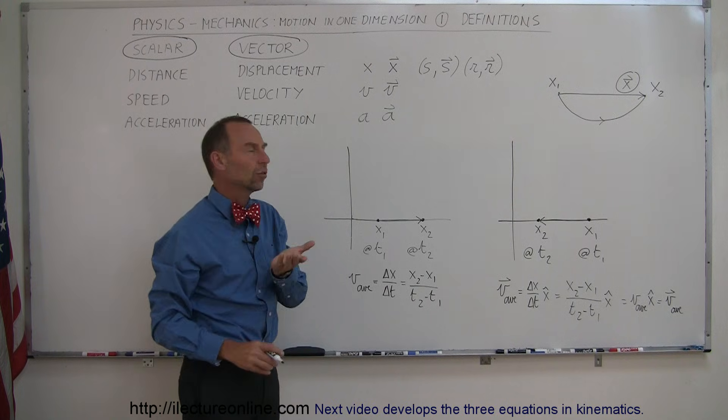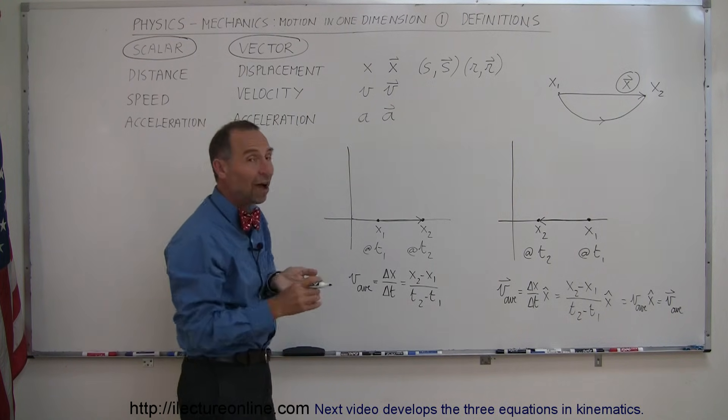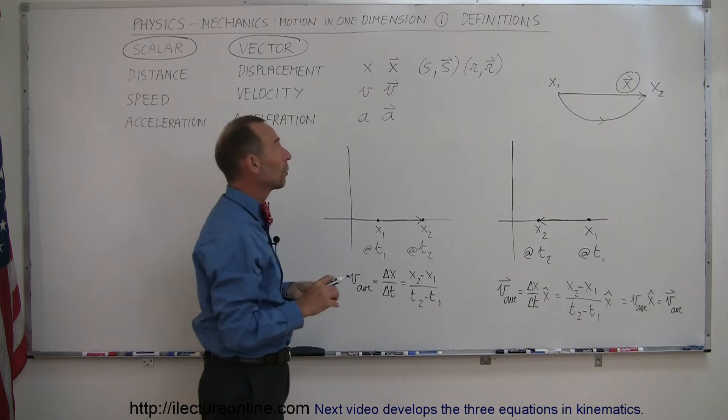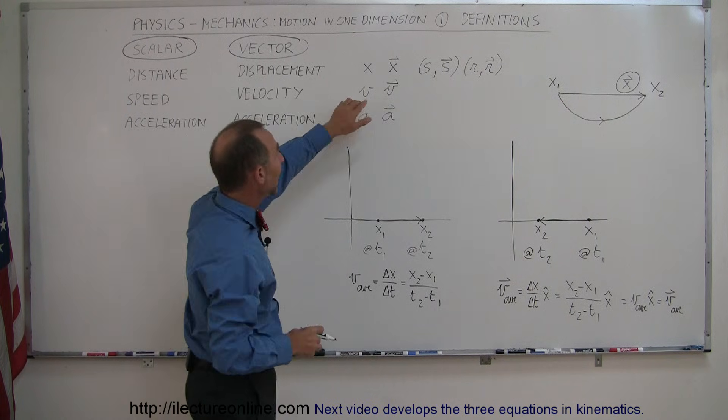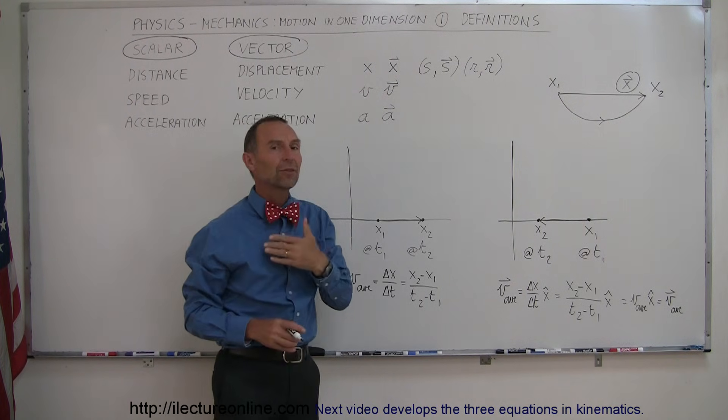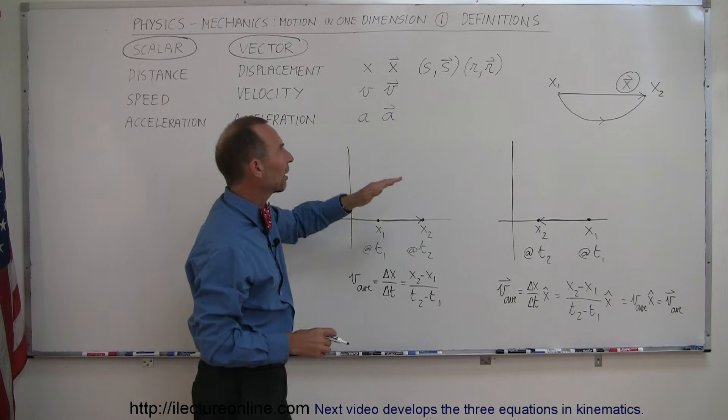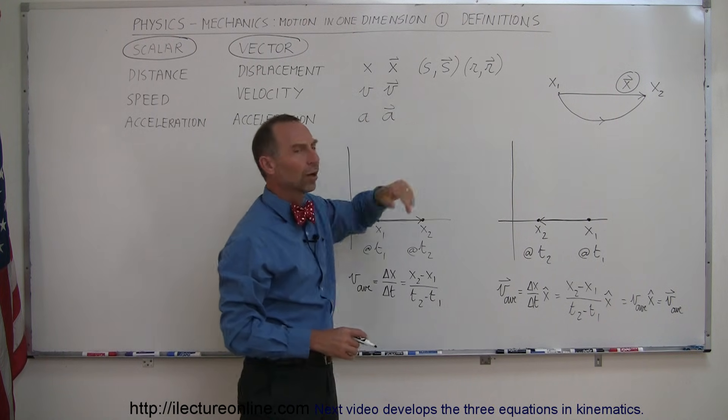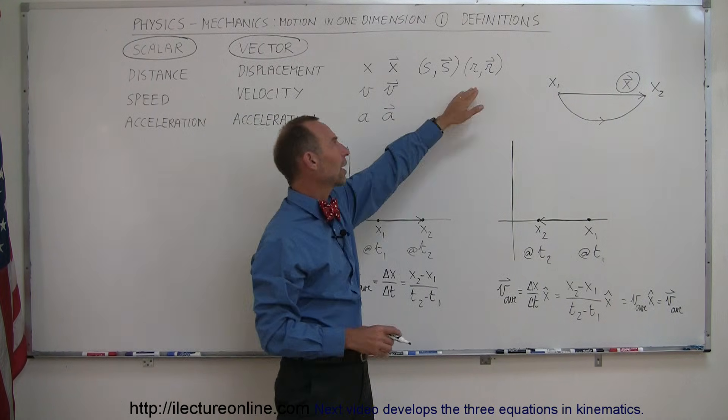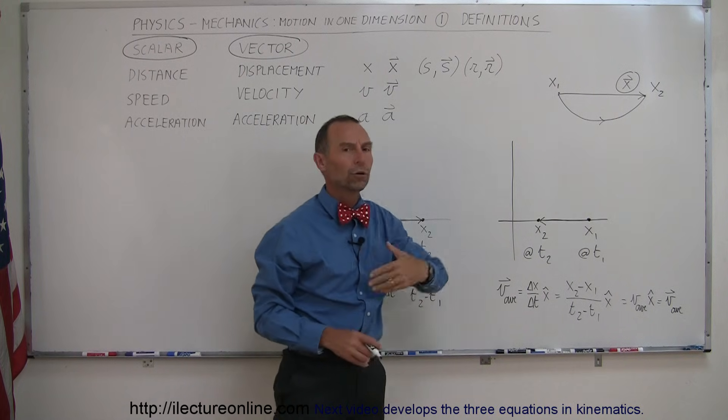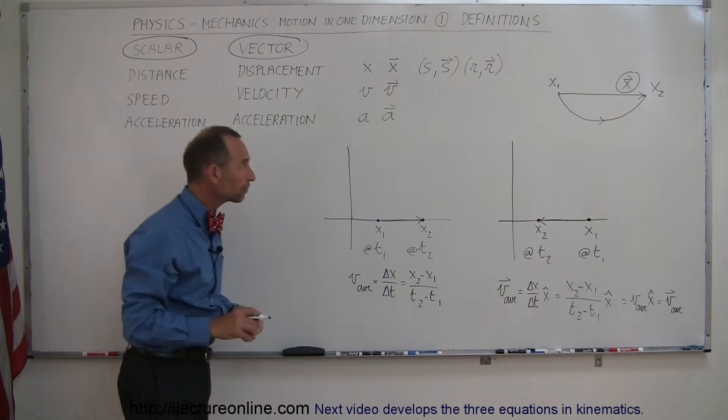x, typically, is associated with how far the person traveled. So that would be distance traveled. x, with a little vector symbol on top of it, means displacement. Sometimes we use the letter S to indicate displacement. Sometimes we use the letter R for position vector.